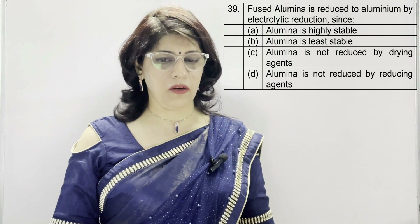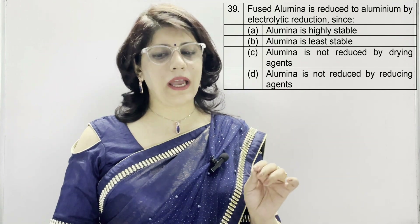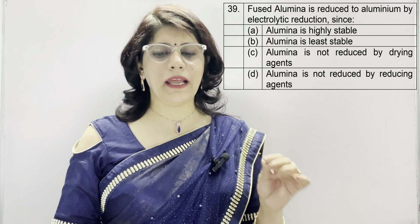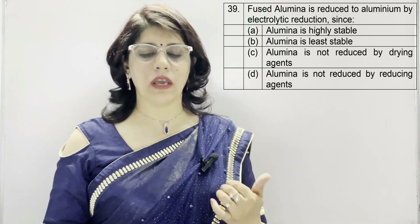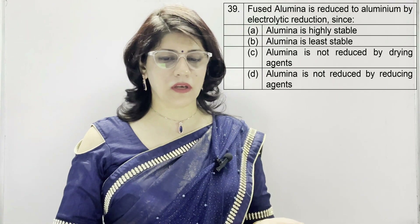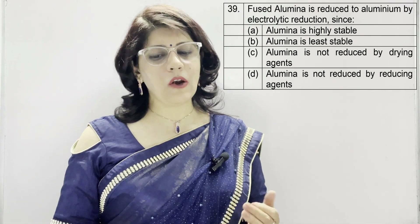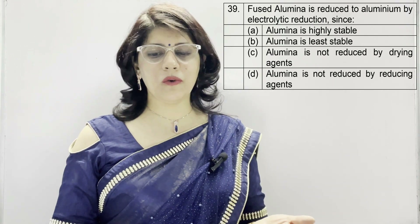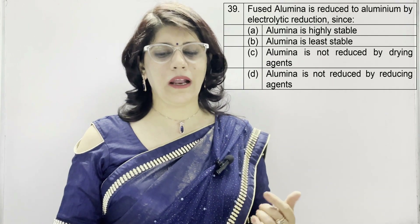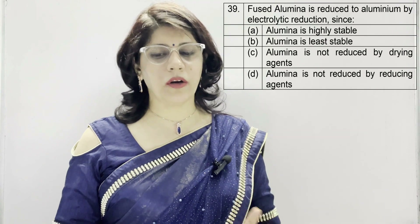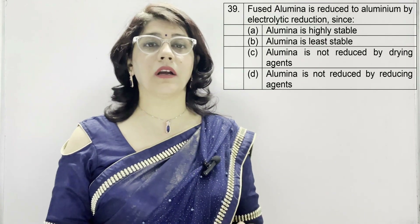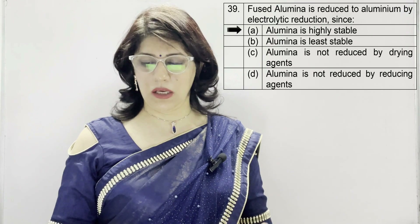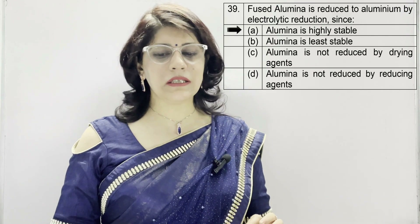In question number 39: fused alumina is reduced to aluminium by electrolytic reduction because — A: alumina is highly stable, B: alumina is least stable, C: alumina is not reduced by drying agents, D: alumina is not reduced by reducing agents. The correct option is A — alumina is highly stable.